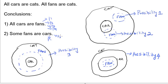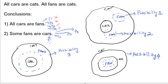Now we analyze the conclusions for all 4 possibilities. Conclusion 1 is 'all cars are fans.' In possibility 1 and possibility 2 it is false, and in possibility 3 it is true — a cross mark means false and a tick mark means true — while in possibility 4 it is false. Because all fans are cars in possibility 3 only, and a conclusion is valid only if it holds in all possibilities, none of the conclusions is valid.